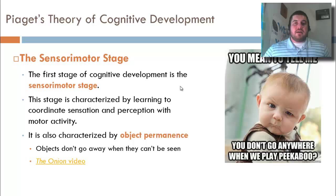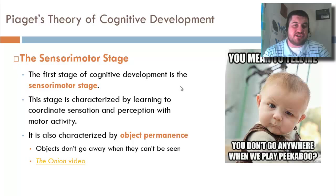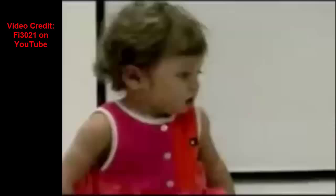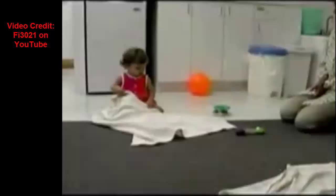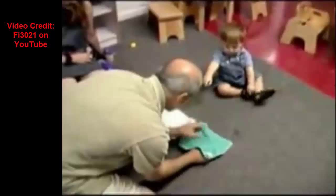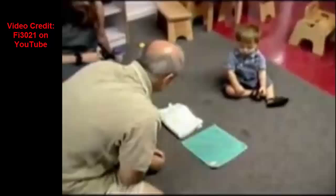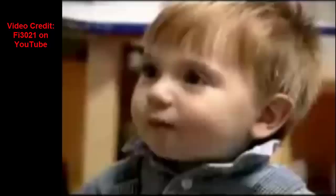Piaget's first stage of cognitive development is the sensorimotor stage. This is basically learning how to be alive and coordinate your sensation with perception and motor activity. Before you leave the stage, you must develop the concept of object permanence — the idea that objects don't go away when you can't see them. However, ten-month-old infants may still make the classic A-not-B error: even after watching a toy be hidden under a white cloth, they'll look for it where they last found it, not where they watched it be hidden.